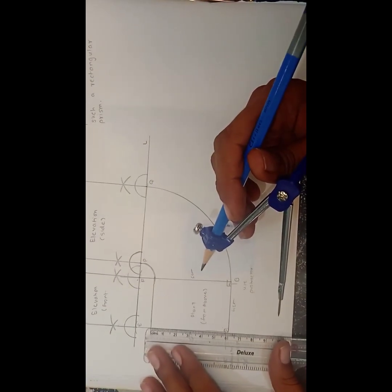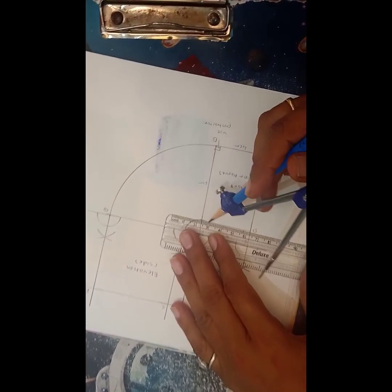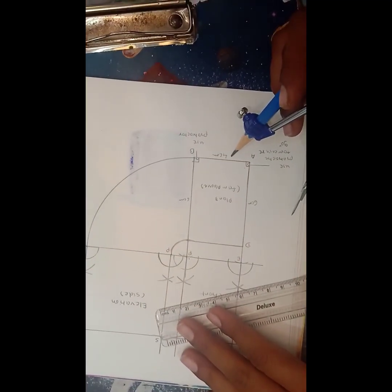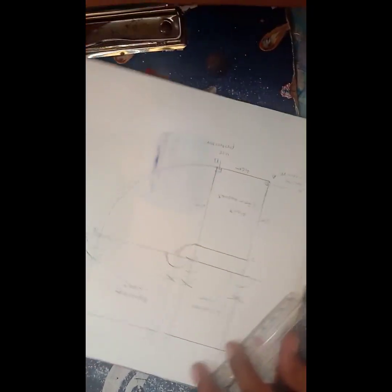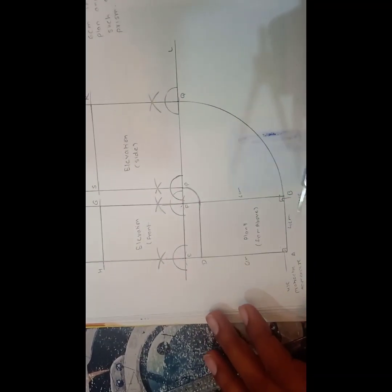Similarly here measure the 6 cm and measure the line. Then draw the line and join the rectangle which is the 4 cm by 6 cm. Now we want to find out its elevation of the prism.